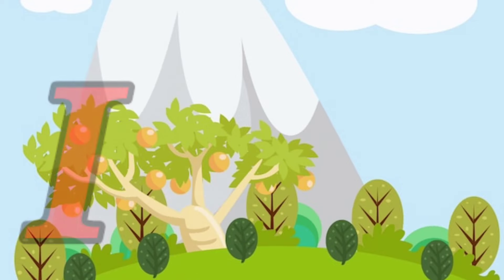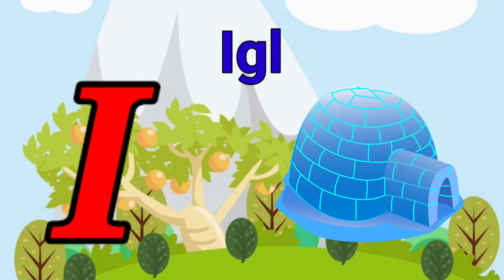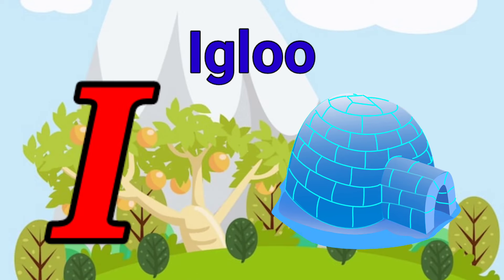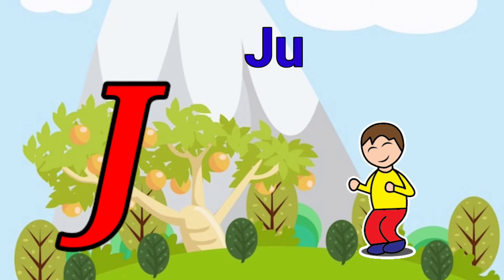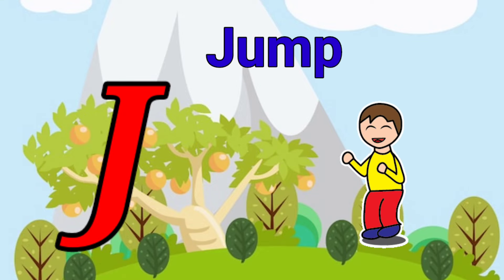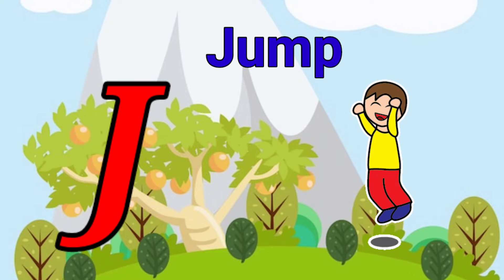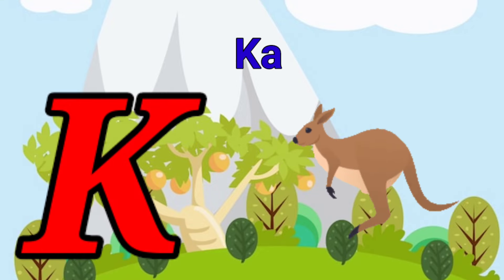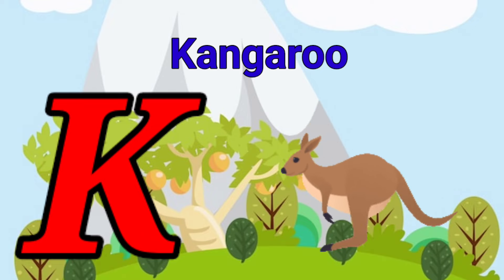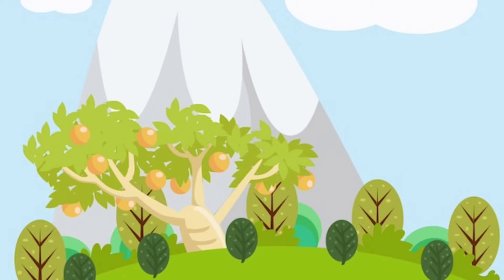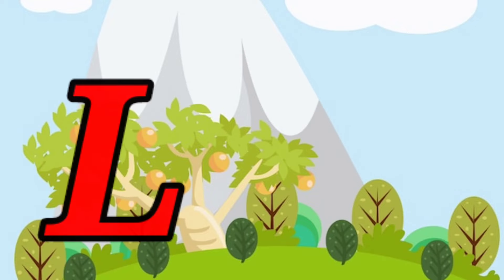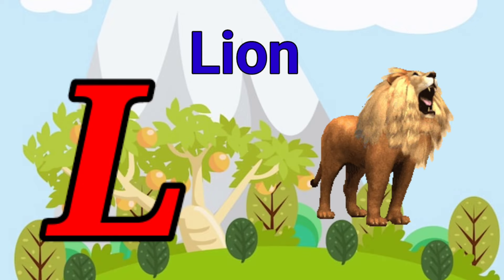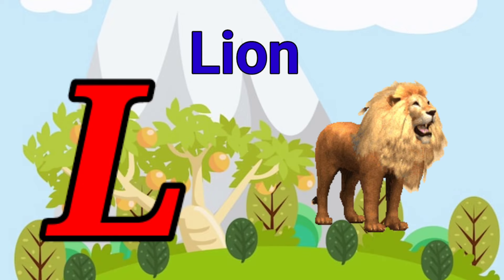I is for igloo, i-i-igloo. J is for jump, j-j-jump. K is for kangaroo, k-k-kangaroo. L is for lion, l-l-lion.